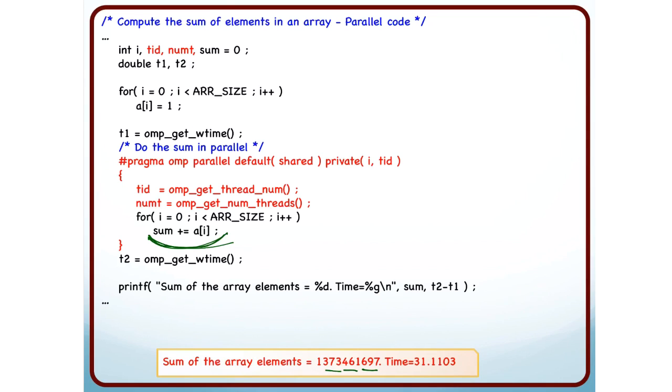And what is the time I see? 31 seconds, 31.1 seconds. What is the time I had seen earlier in the sequential code? 13 seconds.